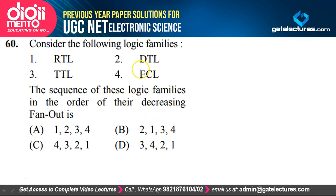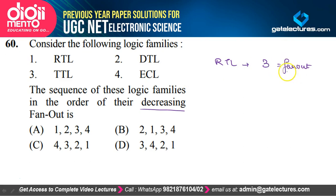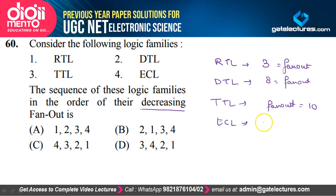Question 60: Logic families RTL, DTL, TTL, and ECL in decreasing order of fanout. RTL fanout = 3; DTL fanout = 8; TTL fanout = 10; ECL fanout = 25 (highest). Note: MOS transistor would have the highest fanout if included. Decreasing order: ECL (4), TTL (3), DTL (2), RTL (1) — option C is correct.